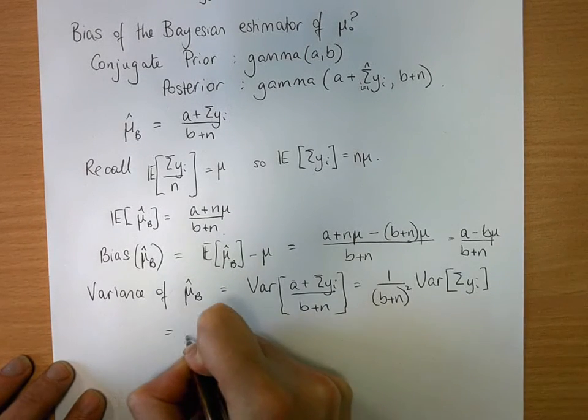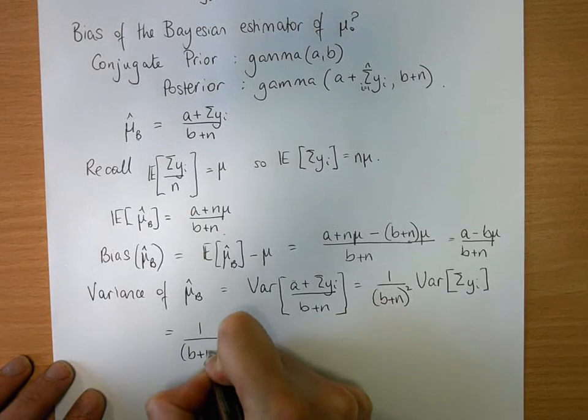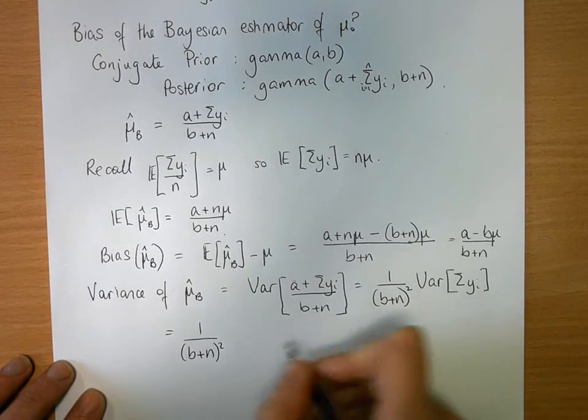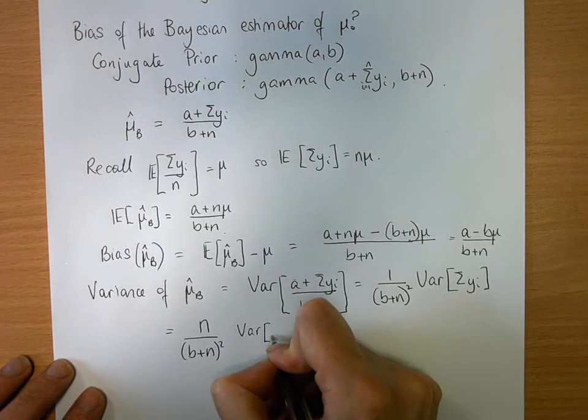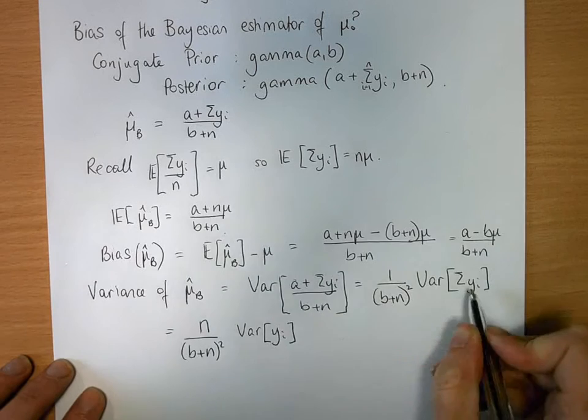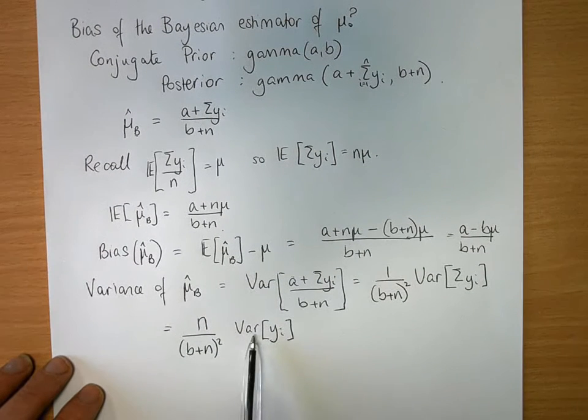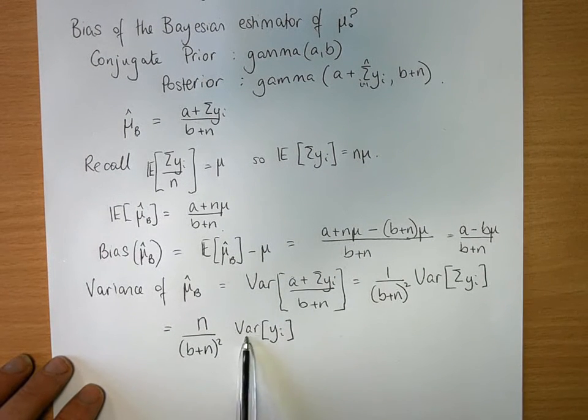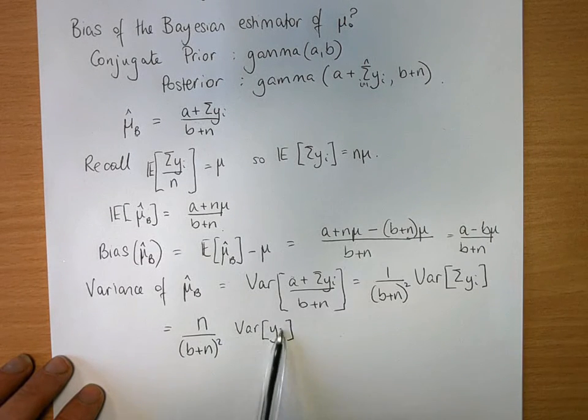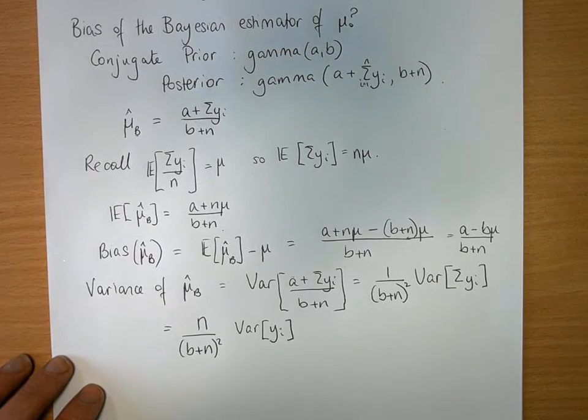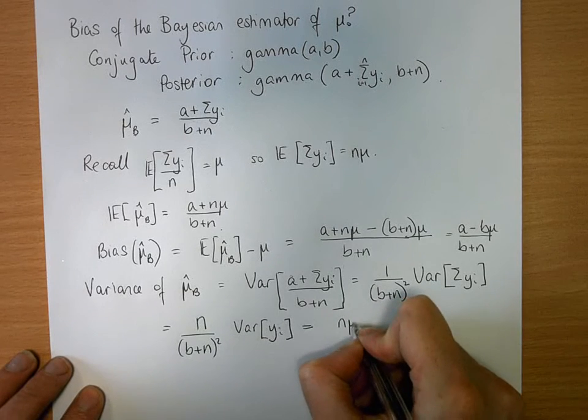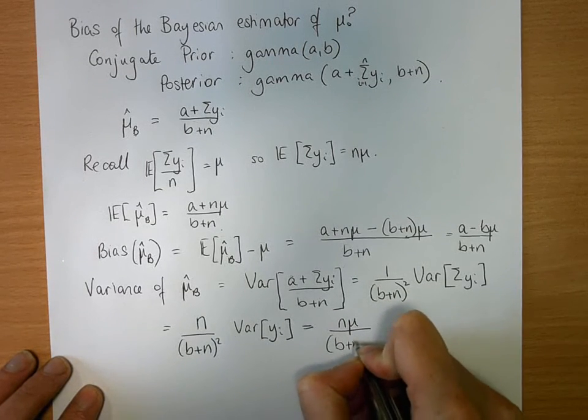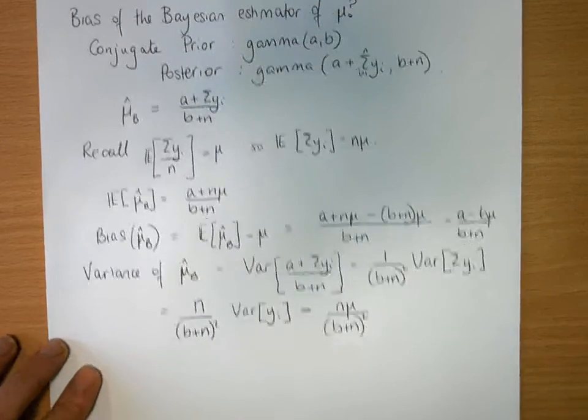Which is equal to 1 over b plus n squared times n times the variance of each individual yi, because these are independent of one another. And the mean is the same as the variance for Poisson distribution because our data are Poisson distributed. That's what you have to remember. It's what's the distribution of the data here. So we say that is n mu over b plus n squared.